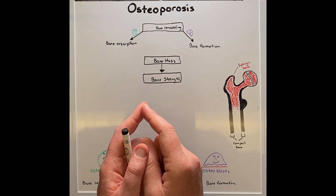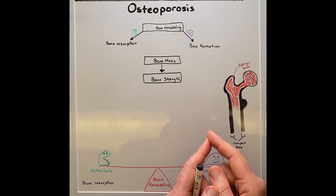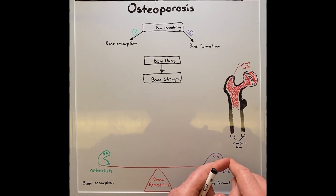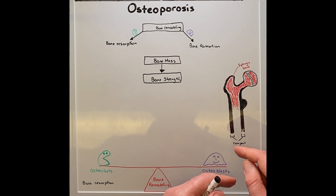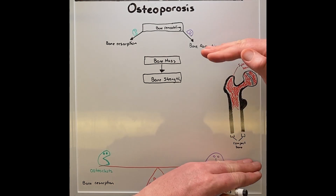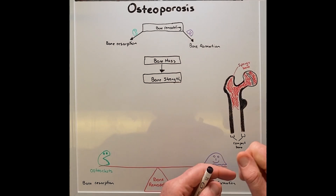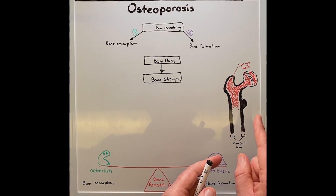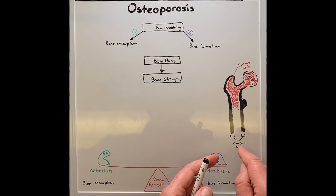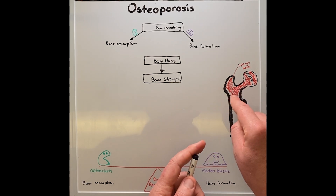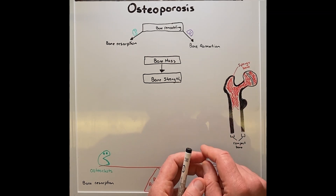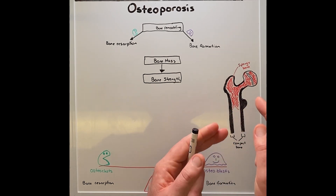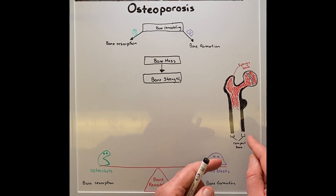Before we get to the disease itself, let's first have a look at bones in general. Bones have an outer solid surface known as compact bone, which provides strength particularly in compression forces. The inner portion of the bone, known as spongy bone, is less dense than the compact bone and looks like it has holes all the way through it, which makes it look like a sponge. The spongy bone provides good support and flexibility, but without the weight.